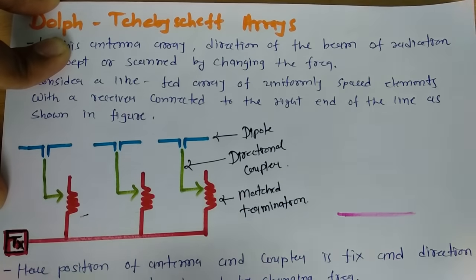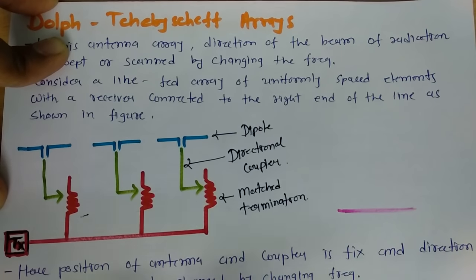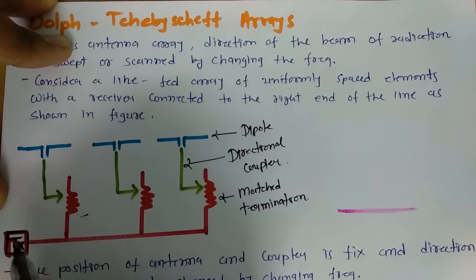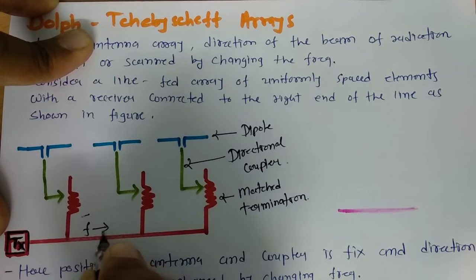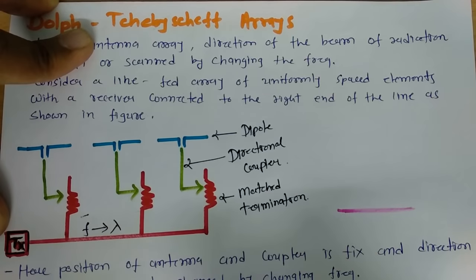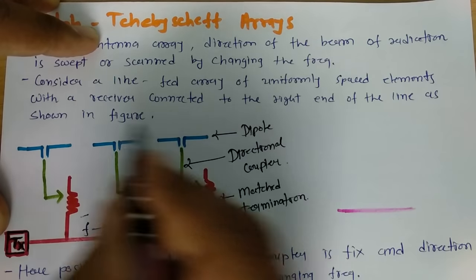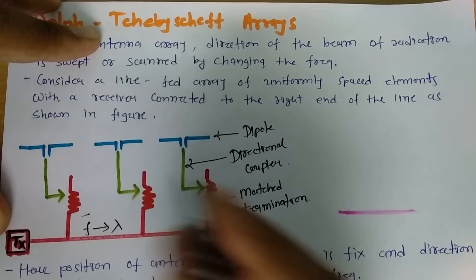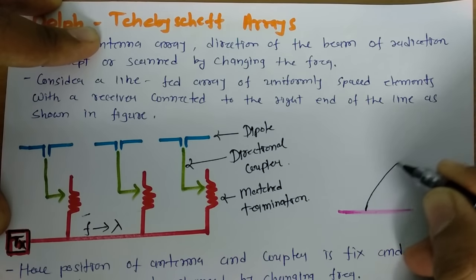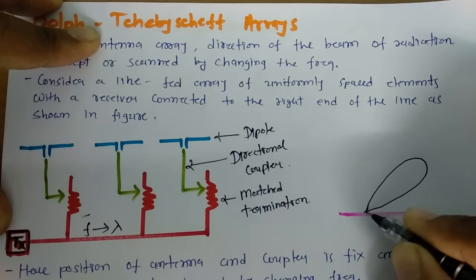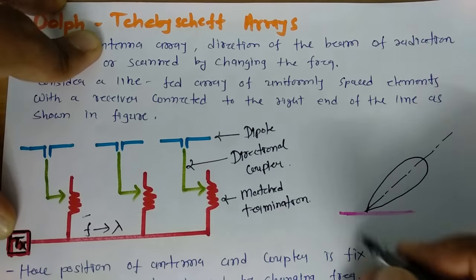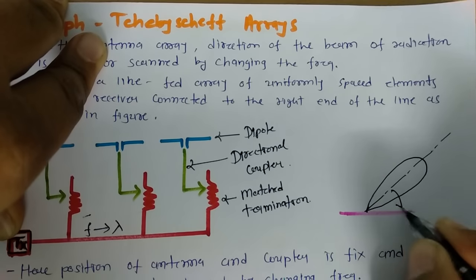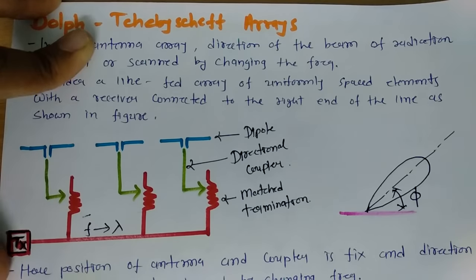And here we have a transmitter. Now, if I say I have certain amount of frequency, that will lead to certain amount of wavelength. At certain frequency, if I say this array of antenna that is radiating in this direction, and that radiation that is happening at angle phi.